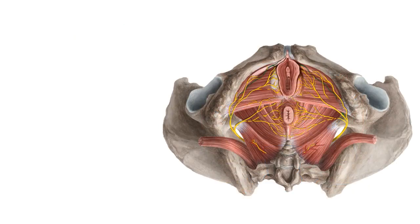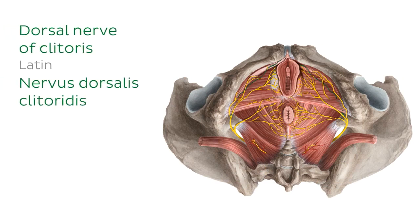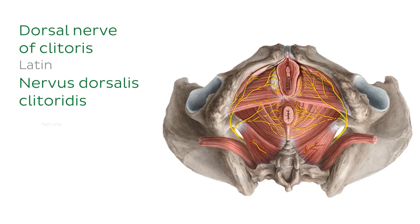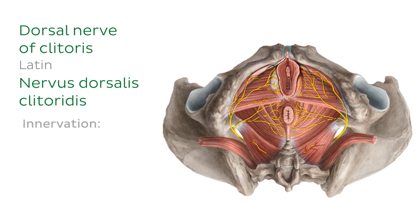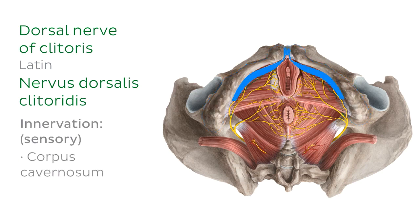The dorsal nerve of the clitoris is one of two terminal branches of the pudendal nerve. It's a long nerve that runs alongside the ischial ramus and provides sensory innervation to the corpus cavernosum of the clitoris.